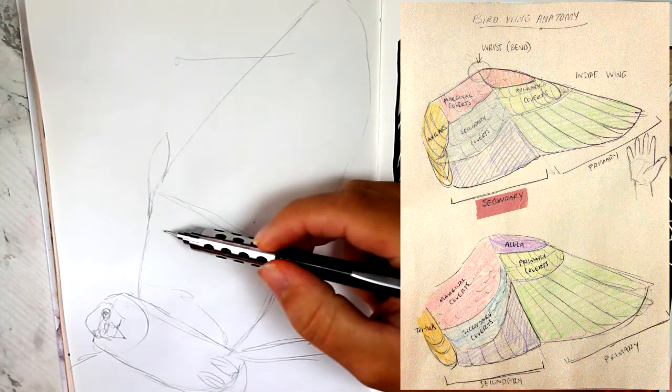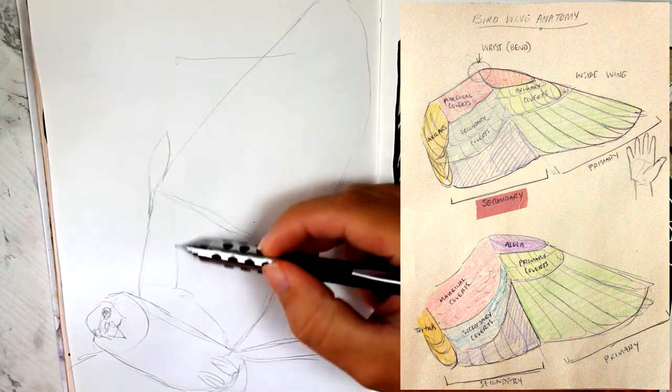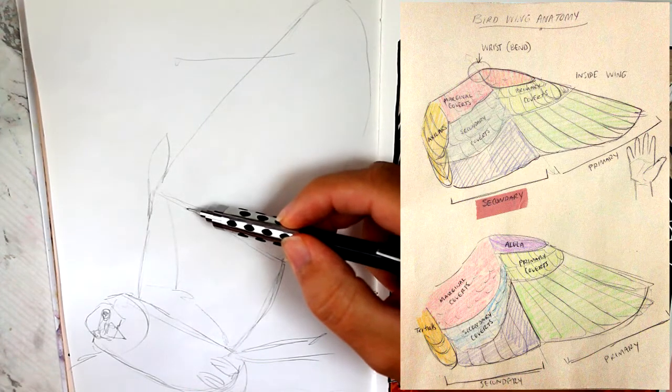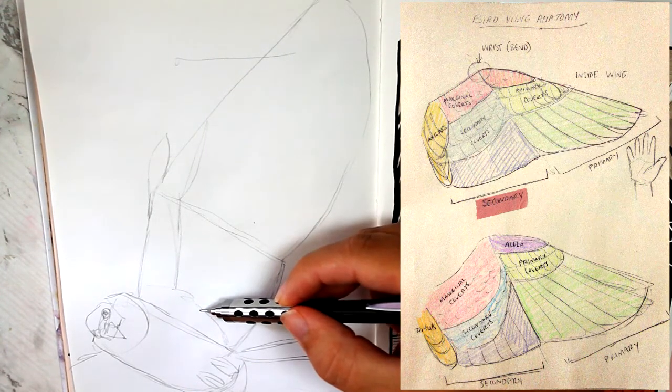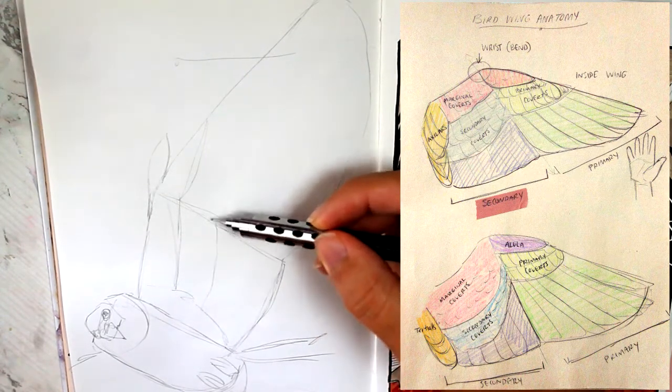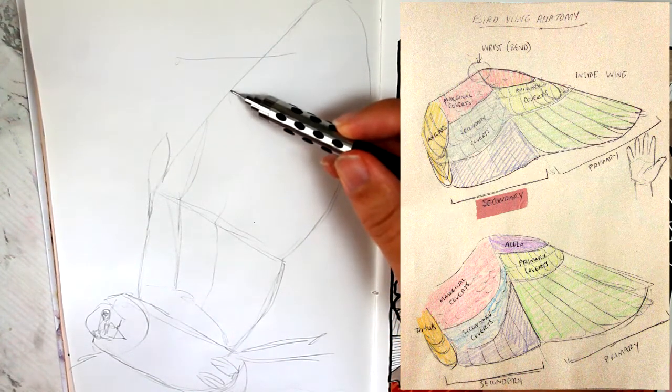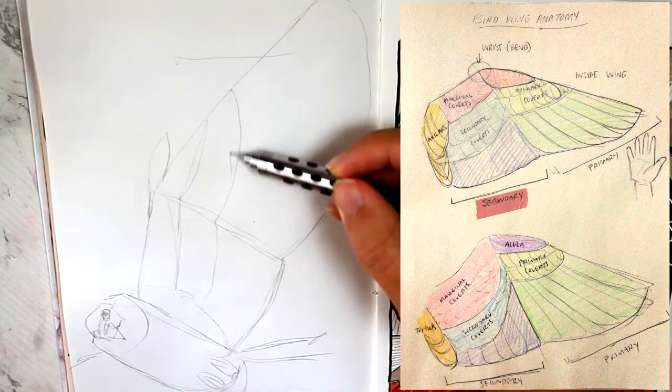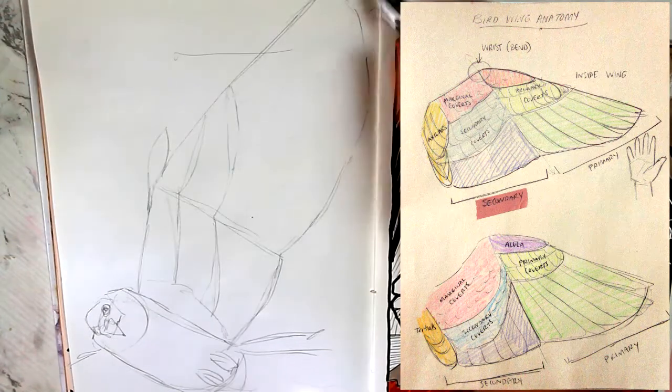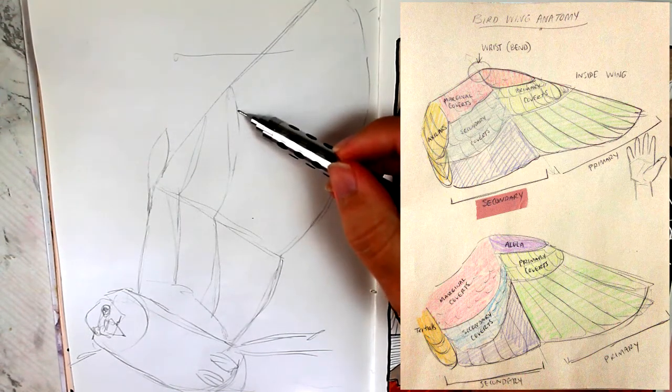I'm going to draw in his marginal coverts at the top, so that's just a little strip. And then he's going to have his secondary coverts, and then his primary coverts on the outside part of the wing here. And these are the nice big feathers that splay out.